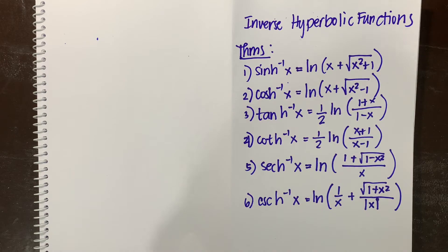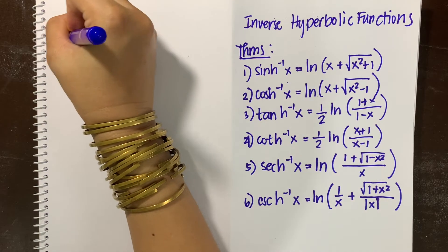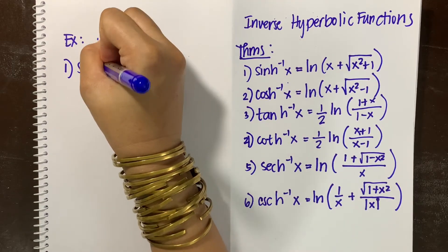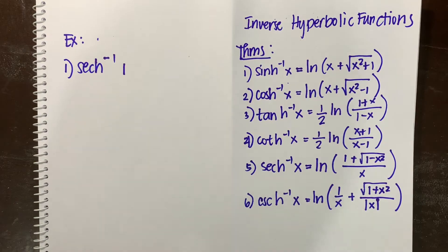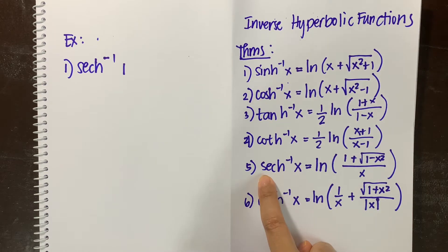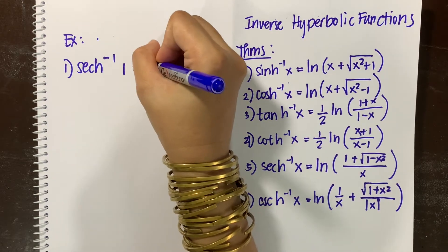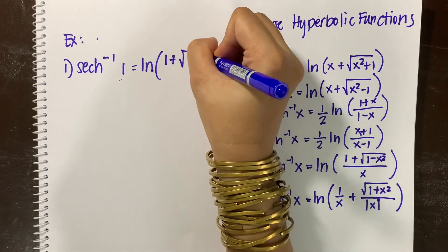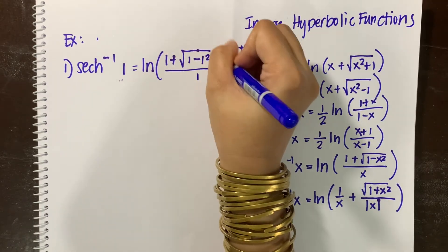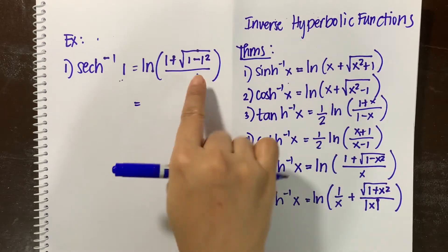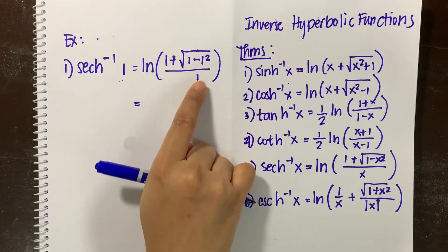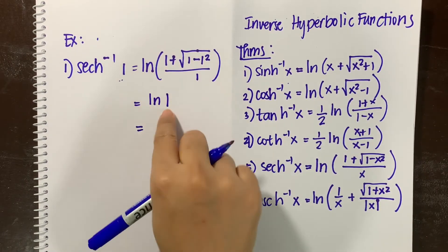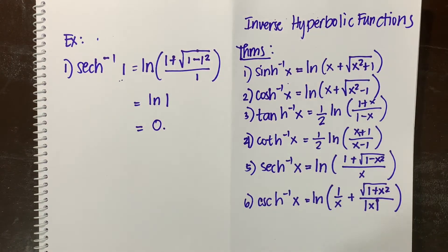Let us apply these theorems with an example. For the inverse hyperbolic secant evaluated at x equal to 1, we substitute into the formula: ln of 1 plus the square root of 1 minus 1 squared, all over 1. This simplifies to 1 minus 1 equals 0, so 1 plus the square root of 0 is 1, all over 1. That gives us ln of 1, which equals 0. So the inverse hyperbolic secant of 1 is equal to 0.